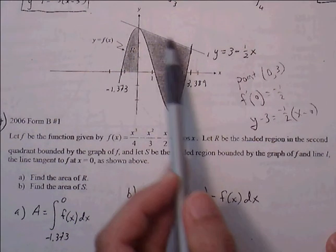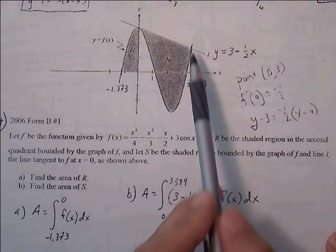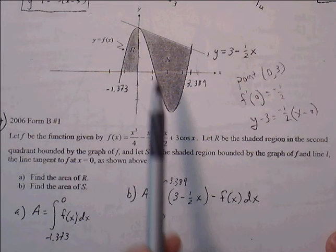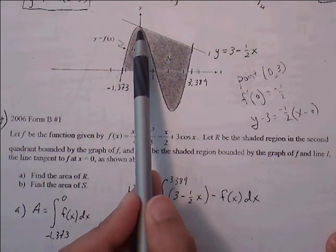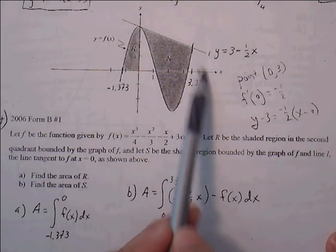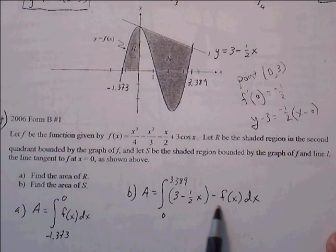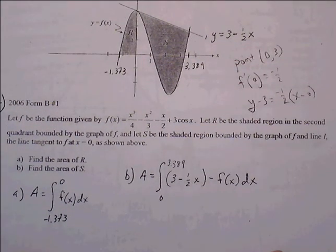This linear equation acts as the top graph, and f of x is the bottom graph. Our bounds go from 0 — the left endpoint of region S — to the right endpoint at 3.389. So we integrate the top curve minus the bottom curve from the left to the right bound, and that gives us the area of region S.